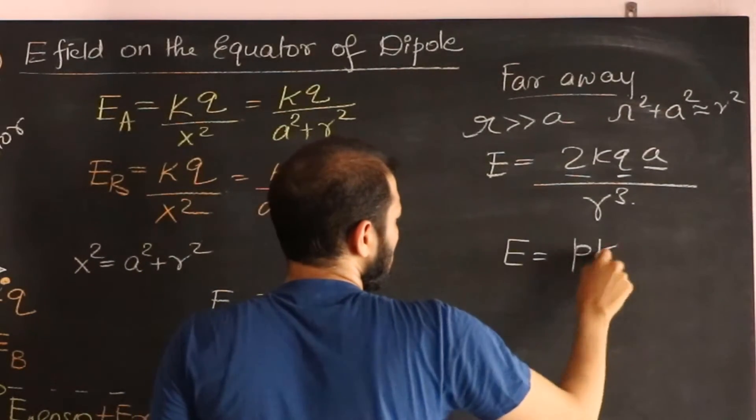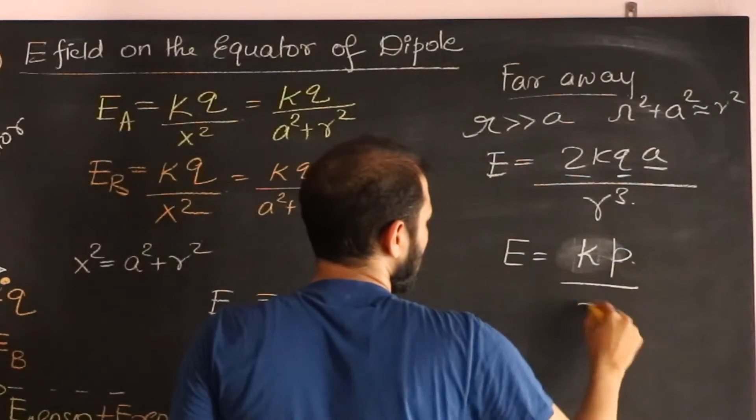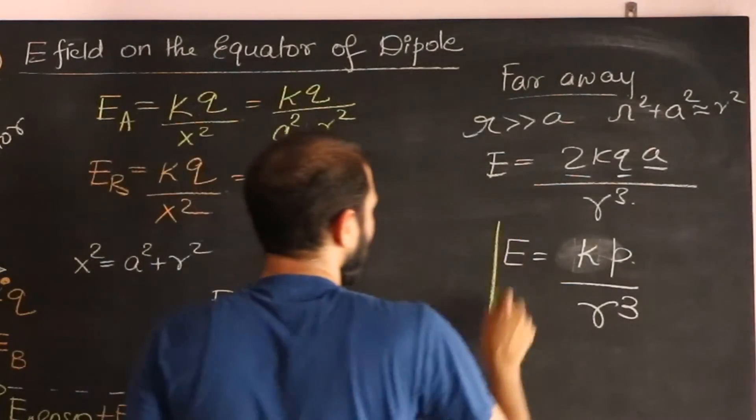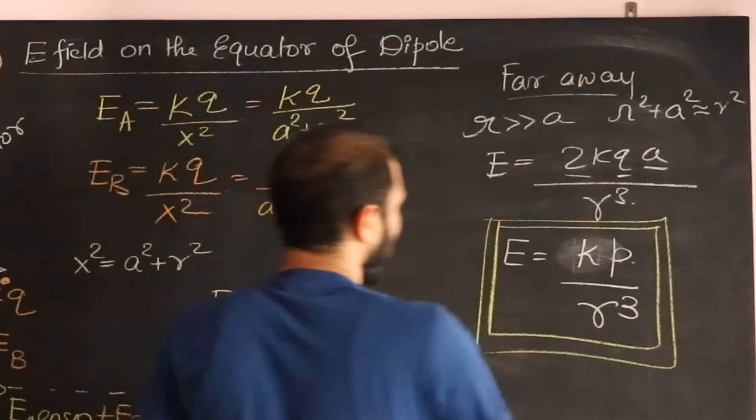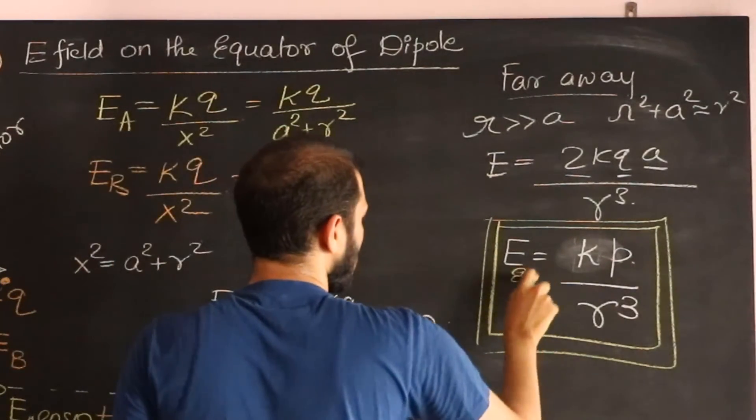So this is going to be P times K. I'll write this as K times P divided by R cube. There we have it, and that is on the equator, so you can put an EQ there.